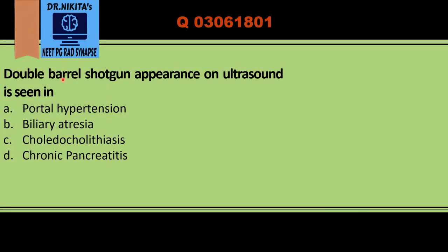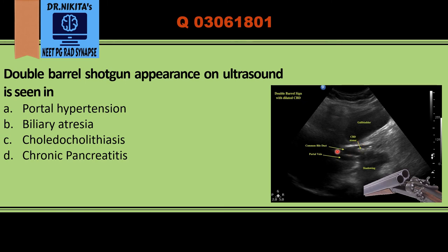The double barrel sign is seen in cases of CBD dilatation. Normally we have the portal vein and a smaller CBD anterior to it. When there is CBD dilatation, the CBD becomes the same size as the portal vein. We see the portal vein and the dilated CBD side by side — like the double barrel appearance of a shotgun.